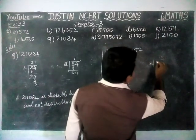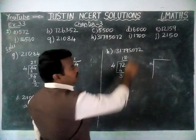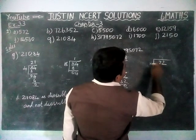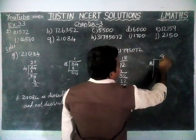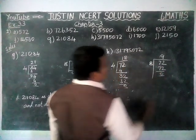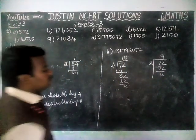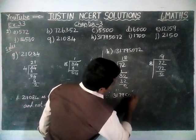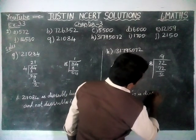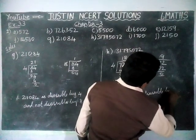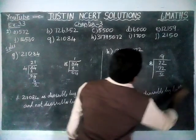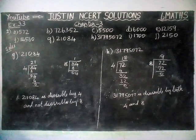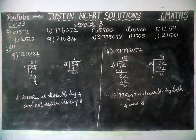Next, we check for divisibility by 8. We need the last 3 digits, but the third digit from the right is 0, so we take only 72. Dividing 72 by 8: 8 nines are 72, remaining 0. So the given number is divisible by both 4 and 8. Option H is divisible by both 4 and 8.